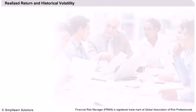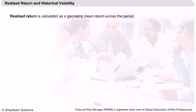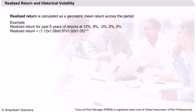Realized Return and Historical Volatility: Realized return is calculated as a geometric mean return across the period. For example, we can compute the geometric return of the last five years of stock returns to arrive at the annualized realized return.